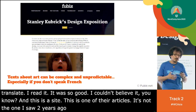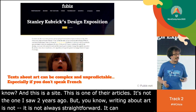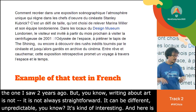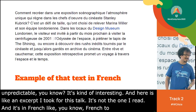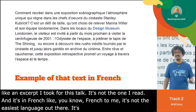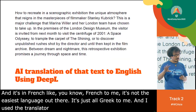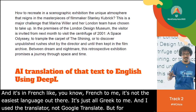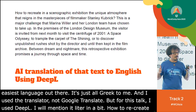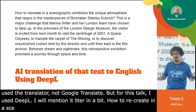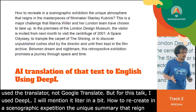Writing about art is not always straightforward — it can be different, unpredictable. So I took an excerpt for this talk and used DeepL to translate it, not Google Translate this time. I just want to read you the first sentence: "How to recreate in a scenographic exhibition the unique atmosphere that reigns in the masterpieces of filmmaker Stanley Kubrick?" If I wrote that, I would be proud. That's what blew me away.